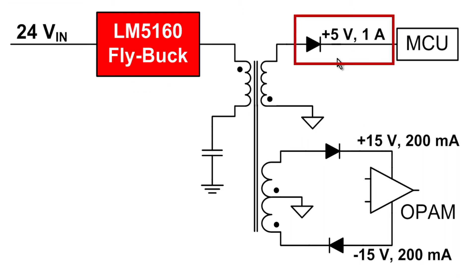There will be three isolated outputs: plus 5 volts at 1 amp to power the microcontroller which usually requires higher current, and then plus 15 volts and negative 15 volts 200 milliamps supply to bias the op amp in the PLC.